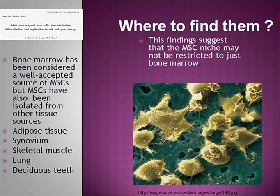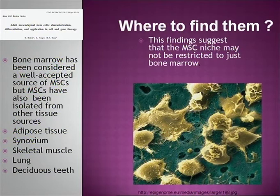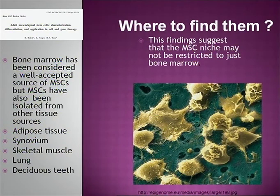Bone marrow has been considered the primary source of MSCs, but MSCs can also be found in adipose tissue, synovium, skeletal muscle, lung, and deciduous teeth. This suggests that the MSC niche may not be restricted to just bone marrow, which is of interest because then we could do research across many areas. We heard earlier today about cells from the synovium, the fat pad, and bone marrow.